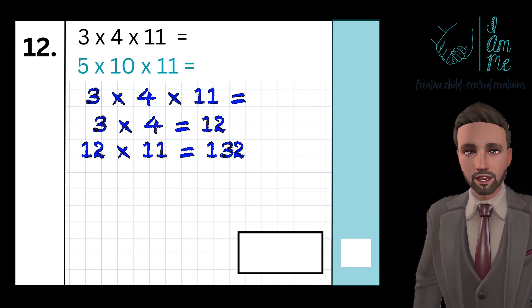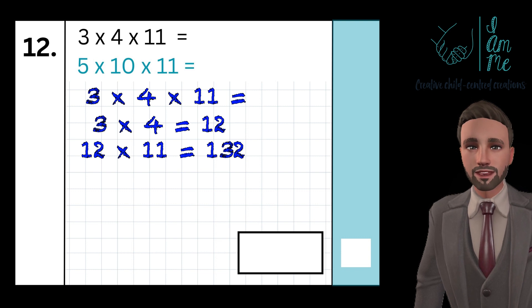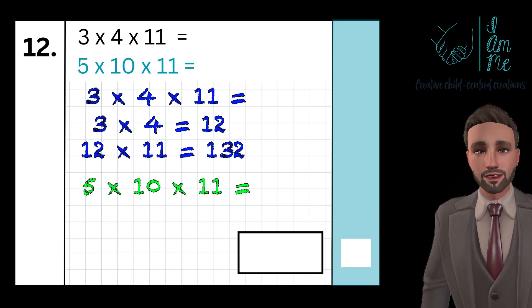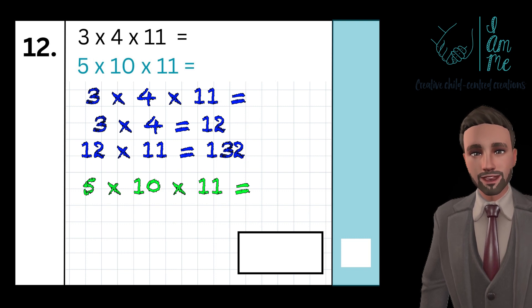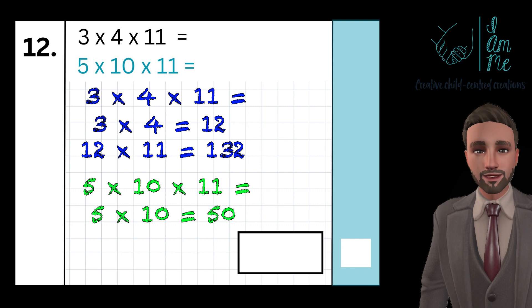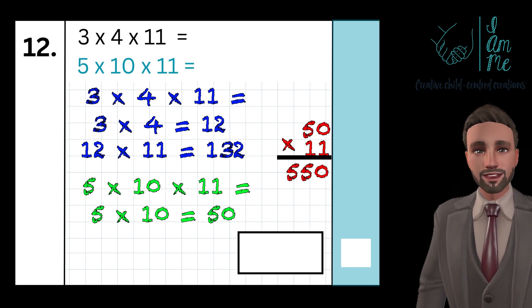If that is too difficult, I could always multiply the first step in my head and then complete the equation with the written method. Let's take a look. Five times ten times eleven. I know five times ten is fifty. Then I can do fifty times eleven in a written method like so. Give it an answer of 550.